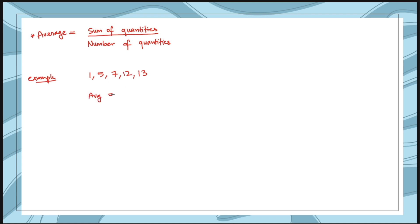Average of all of them will be 1 + 5 + 7 + 12 + 13, divided by 5 because there are 5 numbers. If you add all of them you get 38 divided by 5, which is approximately equal to 7.6. So that is the average of this given quantity.